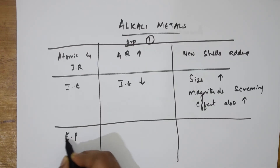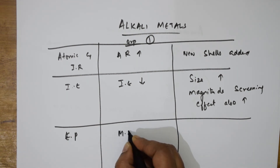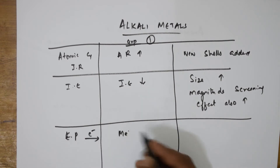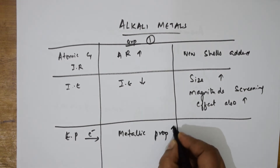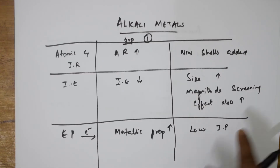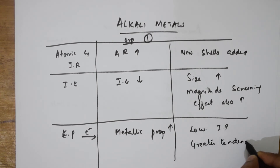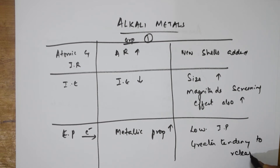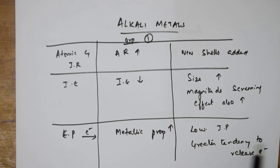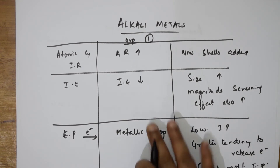Electropositivity — the ability to donate electrons, which is metallic character — increases down the group. Because ionization potential (IP) is low, there is a greater tendency to release electrons. Among lithium, sodium, potassium, rubidium, cesium, and francium — note francium is radioactive — cesium is the most electropositive. It can donate electrons more easily compared to the others.